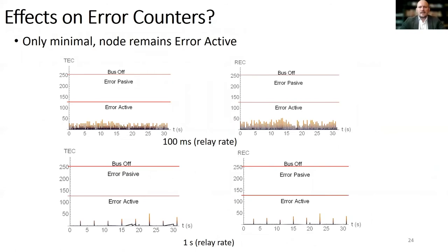The second question is what happens to error counters? Fortunately, as the node continues retransmissions as soon as the bus recovers to recessive state, the error counter will be decremented on successful retransmission. In our experiments, even with a fast relay triggering rate of once every 100 milliseconds, the transmit and receive error counters did not exceed 50, which keeps the node in the error active state. With a lower 1-second relay triggering rate, the situation is even better — the nodes are not even close to the error passive state, and there is no chance that they will go into a bus off state.